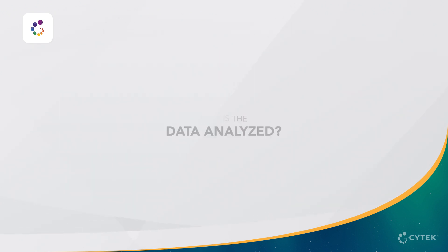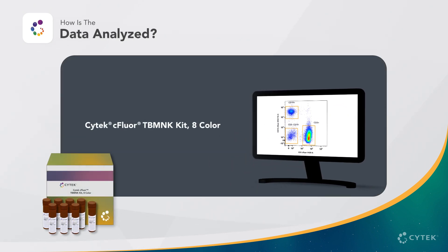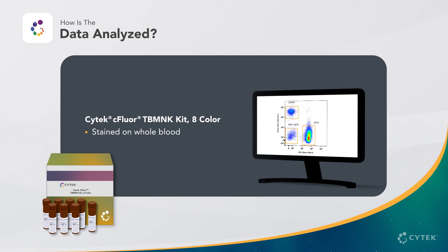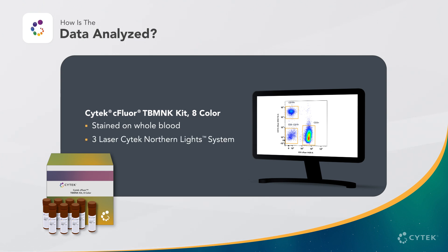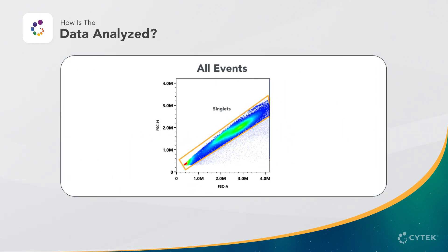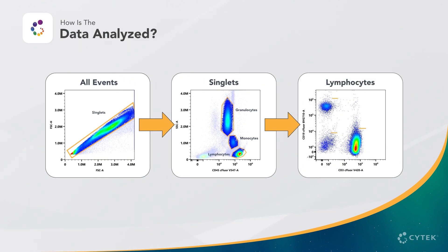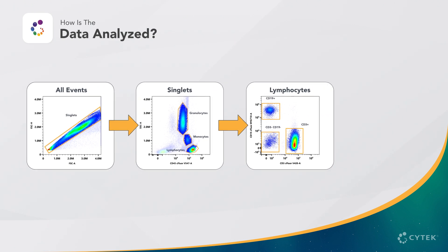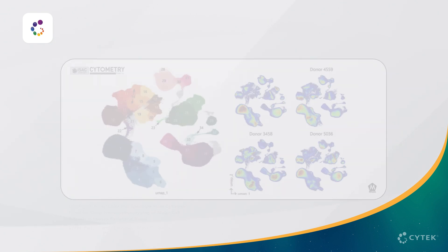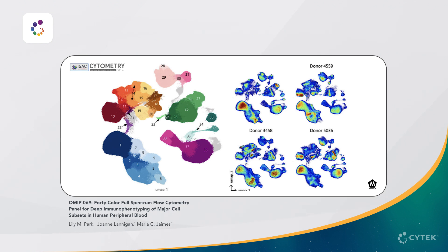How is data analyzed? Once the data is recorded, it is typically analyzed using an analysis software. Here we show data from Cytec's C-Floor TB-MNK kit, stained on whole blood and acquired using a 3-laser Northern Lights system. We first identify single cells using forward scatter, then can differentiate granulocytes, monocytes, and lymphocytes using side scatter and CD45. We can further investigate by drawing a gate and displaying the gated cells to examine markers of interest, such as using CD19 and CD3 to differentiate B cells and T cells, and the CD8 versus CD4 T cell subsets. For higher parameter datasets, unsupervised data visualization methods can be used to identify cell subsets with similar expression patterns.